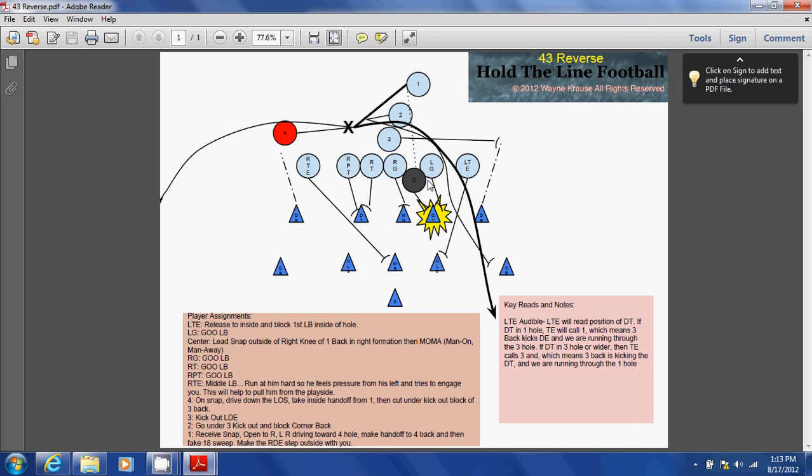In which case that call will be a one call. The one call by the left tight end tells the three back that he is going to be kicking out the defensive end. The defensive end on the left side is the man on the line of scrimmage, the first man on the line of scrimmage on or outside of the left tight end.